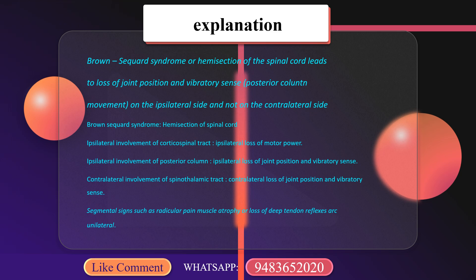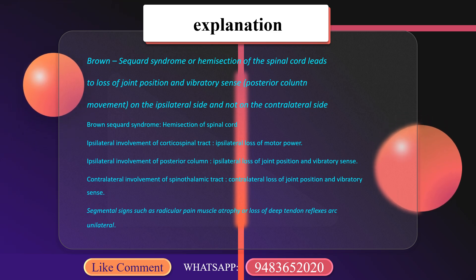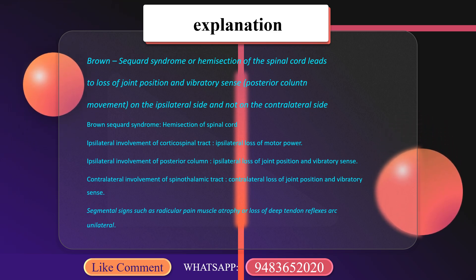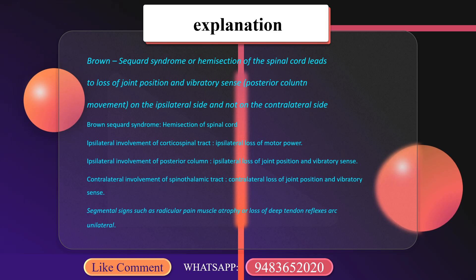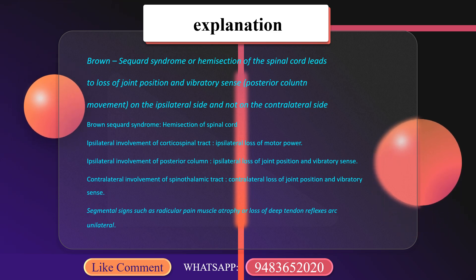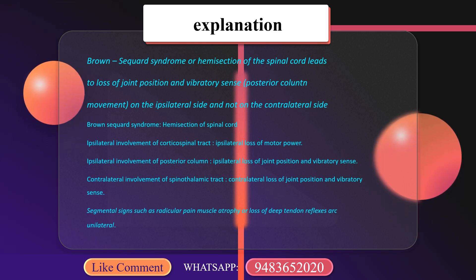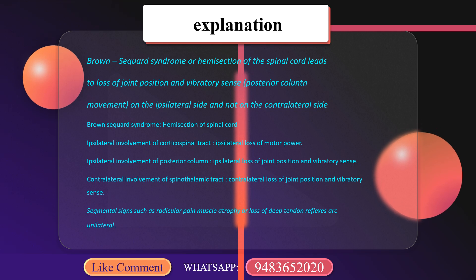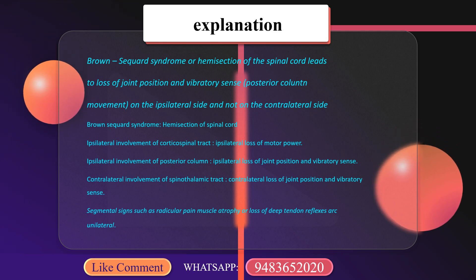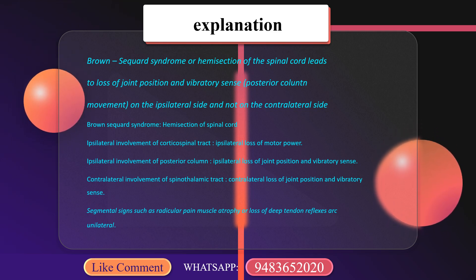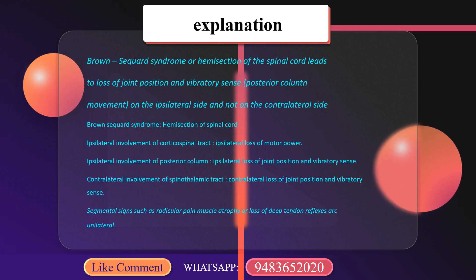In Brown-Séquard syndrome there is hemisection of the spinal cord with ipsilateral involvement of the corticospinal tract — causing ipsilateral loss of motor power — and ipsilateral involvement of the posterior column, causing ipsilateral loss of joint position and vibratory sense. There is also contralateral involvement of the spinothalamic tract.